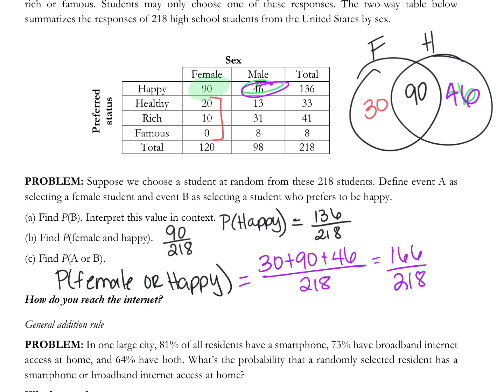Now I could also use the formula, probability of female, that's 120 out of 218, plus the probability of happy, 136 out of 218, minus those that got counted twice, the both, minus 90 out of 218. Still going to give me 166 out of 218.